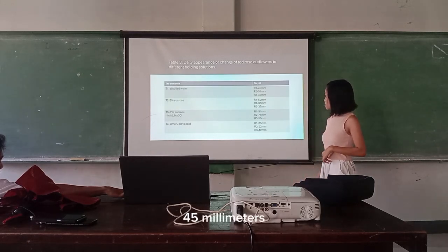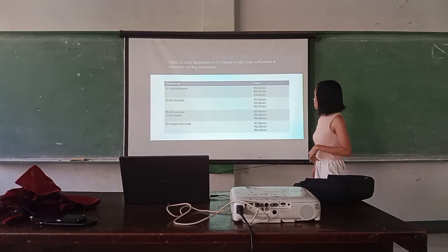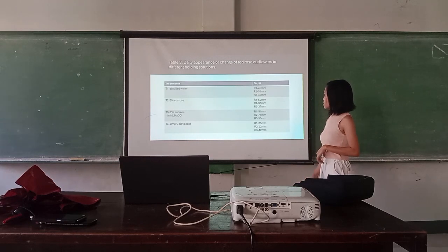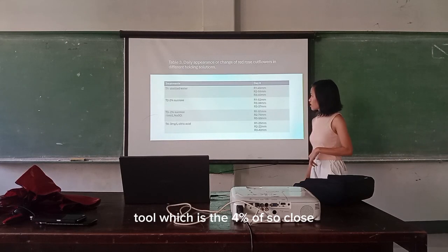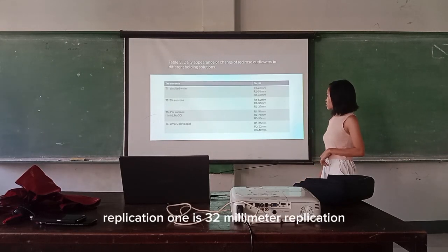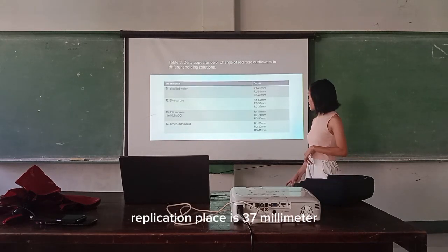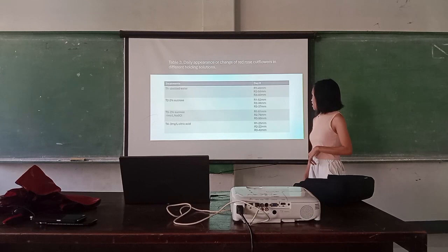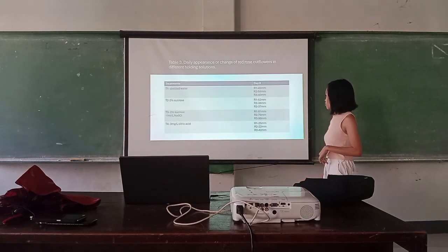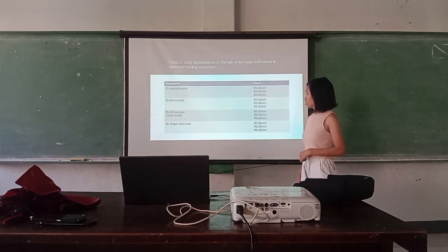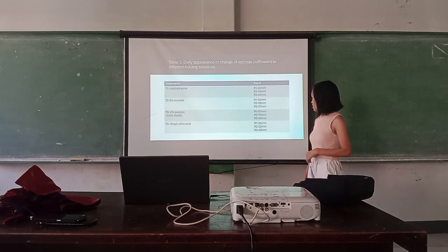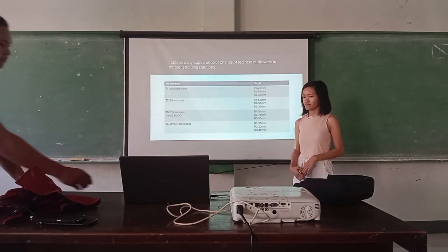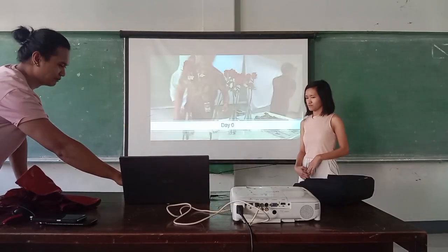Day 0 measurements — Treatment 1, distilled water: Replication 1 is 45 mm, Replication 2 is 58 mm, Replication 3 is 14 mm. Treatment 2, 2% sucrose: Replication 1 is 52 mm, Replication 2 is 38 mm, Replication 3 is 37 mm. Treatment 3, 2% sucrose plus bleach: R1 is 51 mm, R2 is 74 mm, R3 is 15 mm. Treatment 4: R1 is 25 mm, R2 is 32 mm, R3 is 40 mm, and 33 mm.